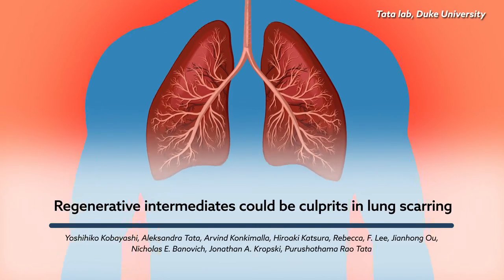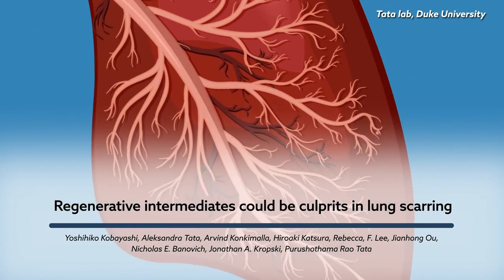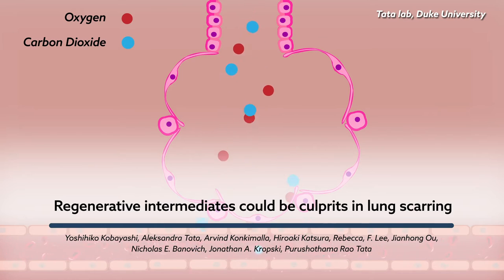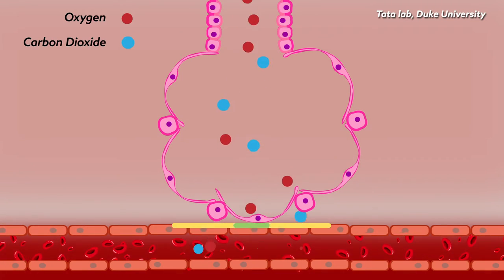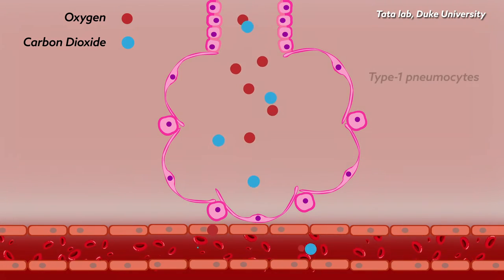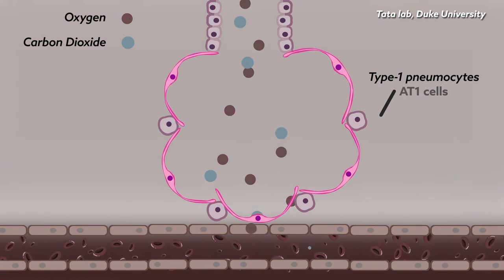Our lungs use very fine tissues to exchange oxygen and carbon dioxide between the air and our blood. About 95% of this tissue is made up of a single kind of cell, called type 1 pneumocytes, or AT1 cells.